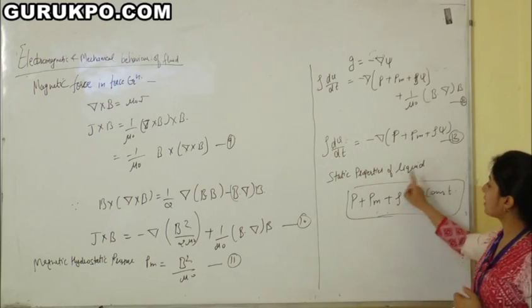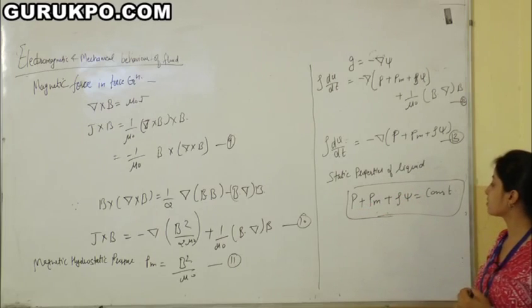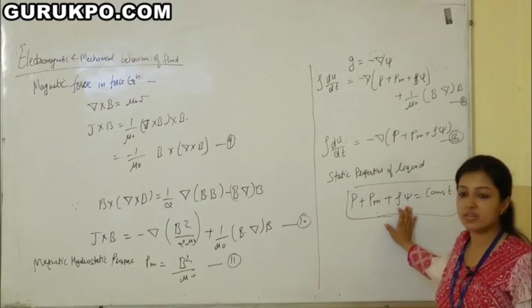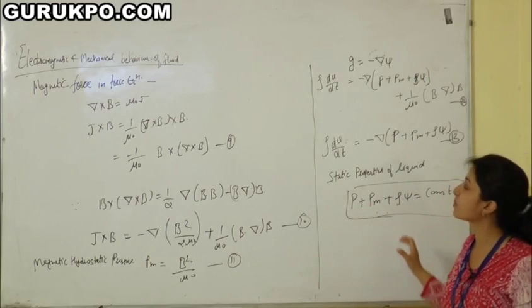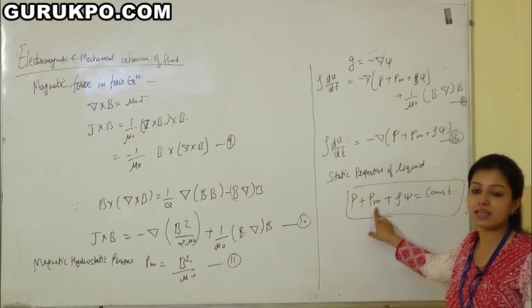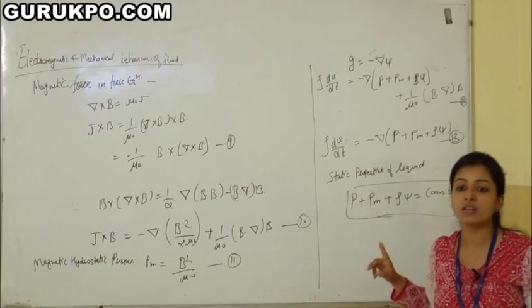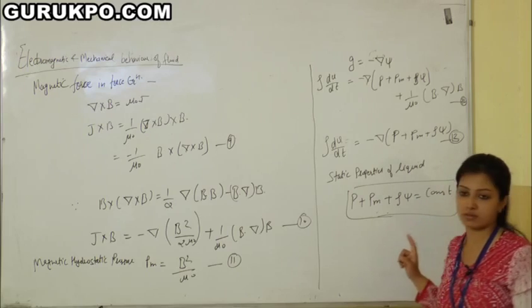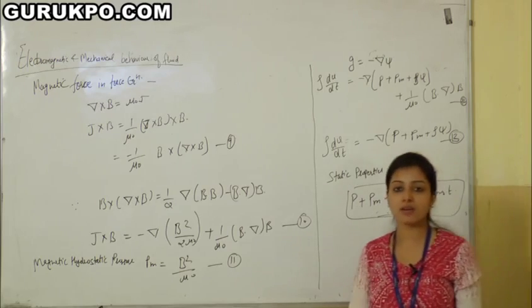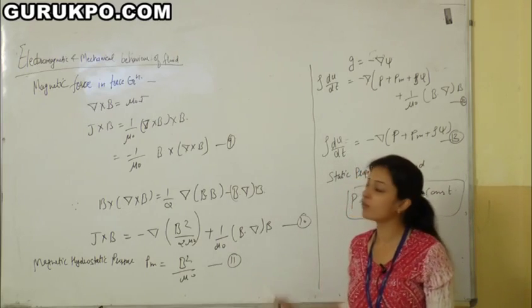For static properties of the fluid, we get p plus p_m plus rho·psi equals constant. This last equation shows that apart from gravitational effects, the magnetic pressure p_m is balanced by an opposite change in kinetic pressure. This is all about the electromagnetic and mechanical behaviour of the fluid.